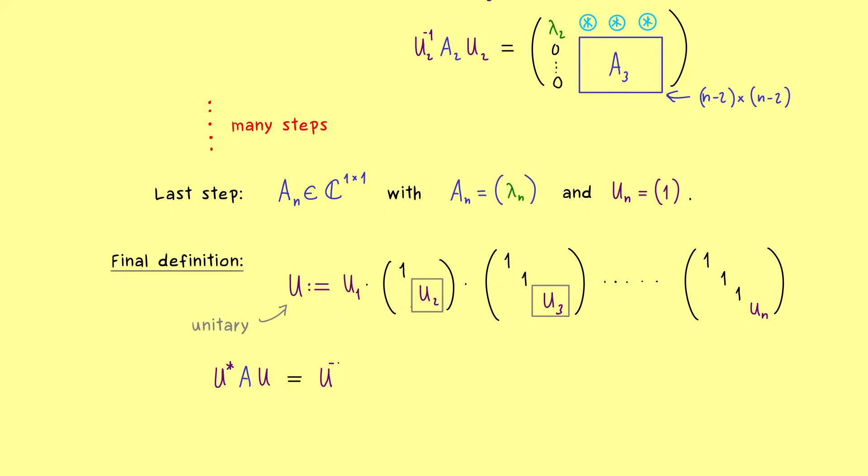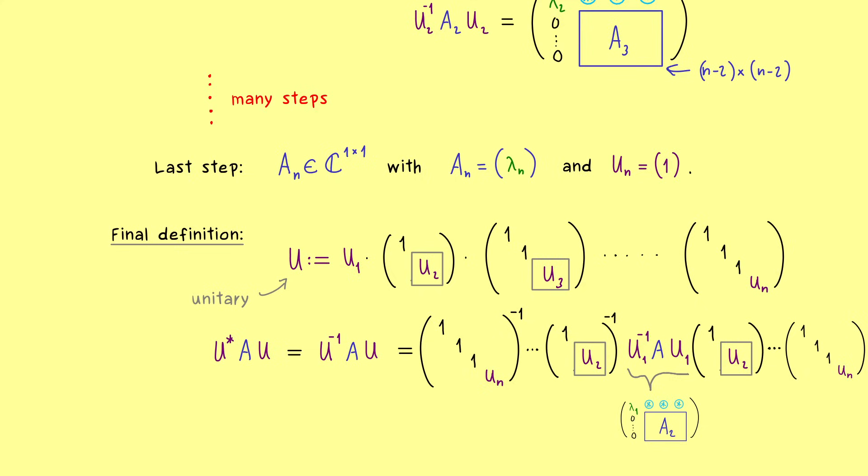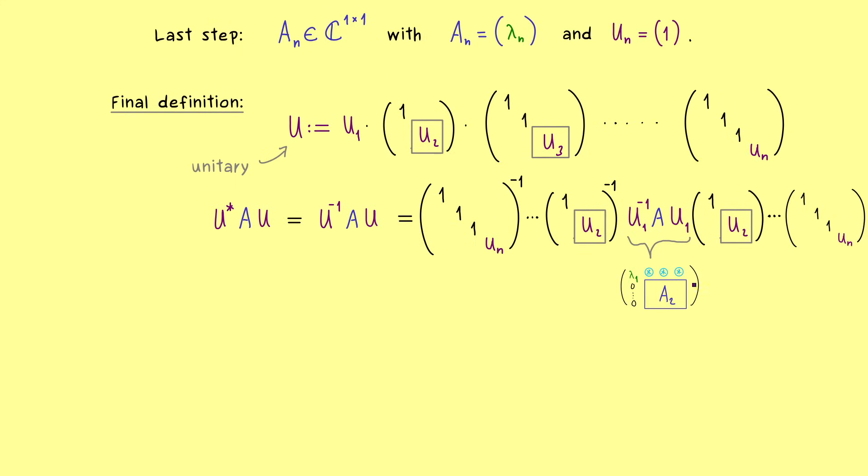And now we can just do the matrix product of U star A U. And since we have a unitary matrix, we can also write the inverse instead of the adjoint. So the implication of that is that we have the inverses in the other order on the left and the normal order on the right. Which means in the middle, we always have the correct combination, which we already know. So for example, here in the first step, we get our matrix A_2 in the right bottom. And then in the next step, the matrices will not change the lambda_1 entry, but U_2 will act on A_2. And then we can just repeat the whole thing. And in the end, we get our upper triangular matrix. And we also see that the eigenvalues lambda_1, lambda_2 and so on are on the diagonal. And by construction, we know that we have the zeros below the diagonal, but we don't know what happens above the diagonal. And there we have our result. This upper triangular matrix is what we call R.